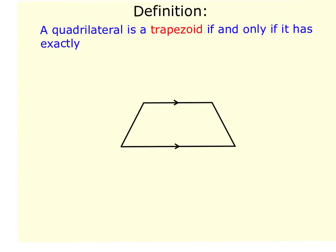This video describes properties of a trapezoid. A quadrilateral is a trapezoid if and only if it has exactly one pair of parallel sides. If you look at the picture, you can see the little arrows which indicate parallel sides.